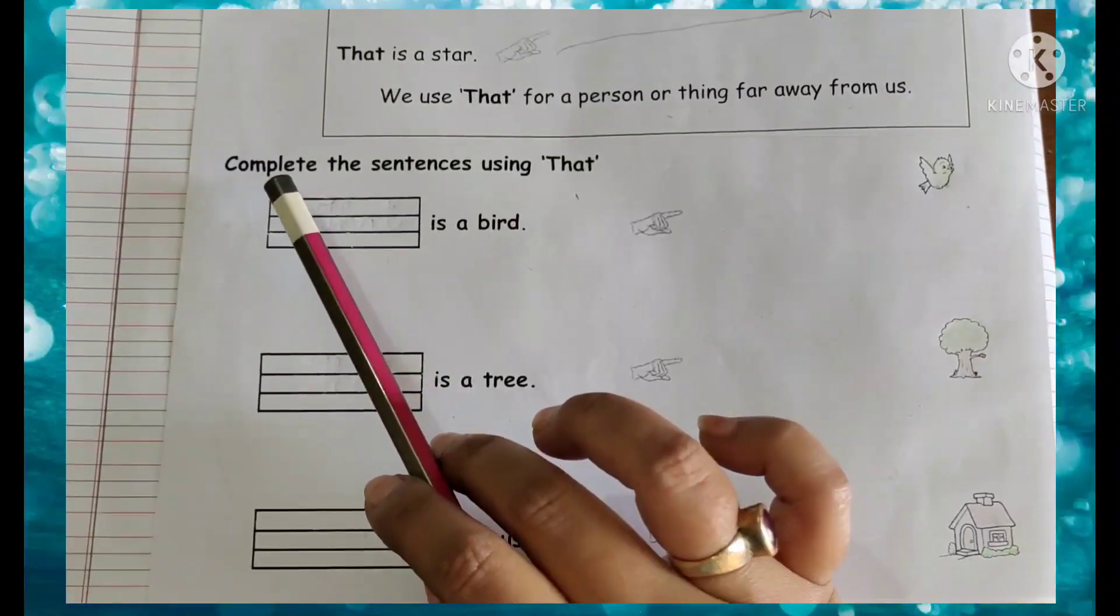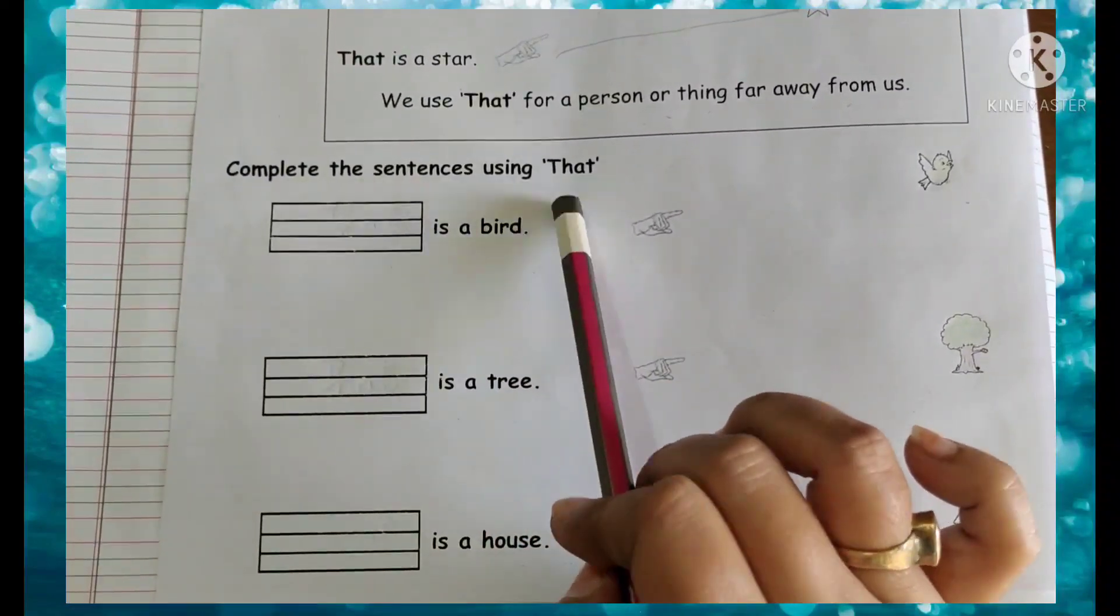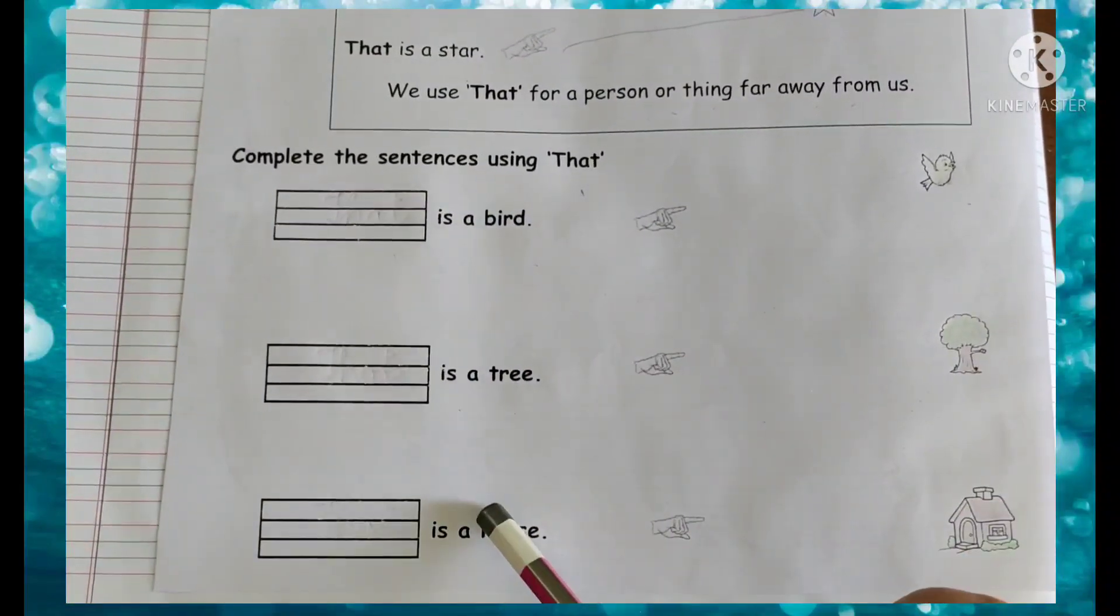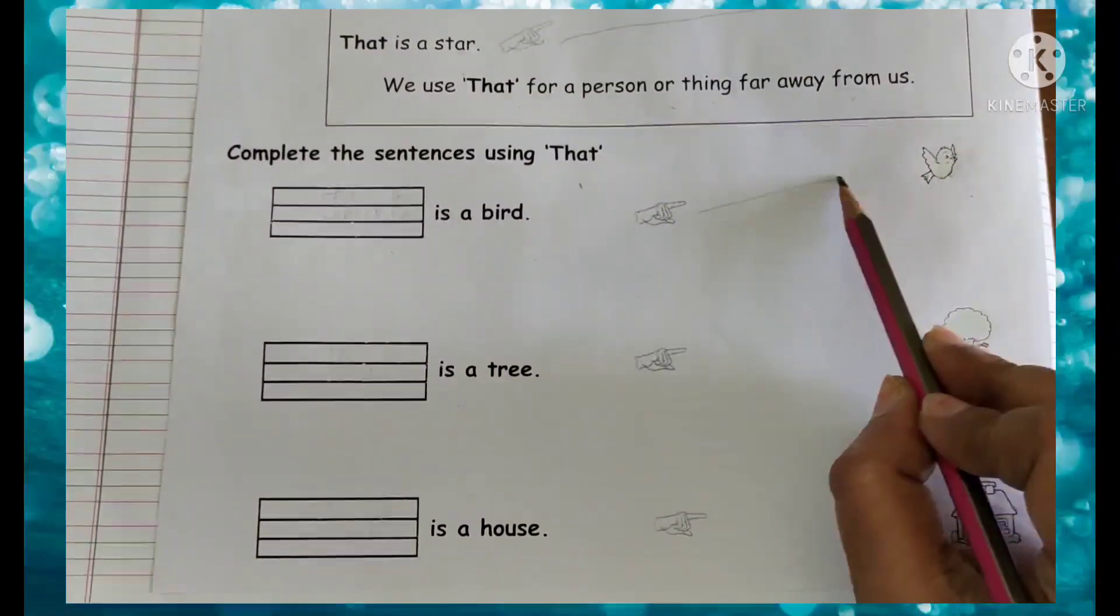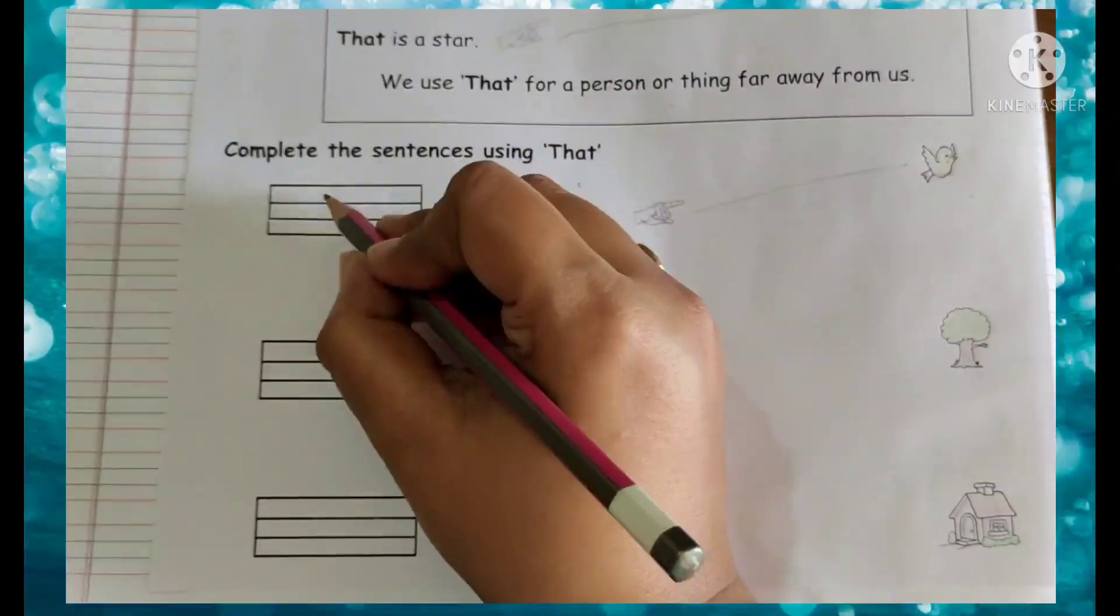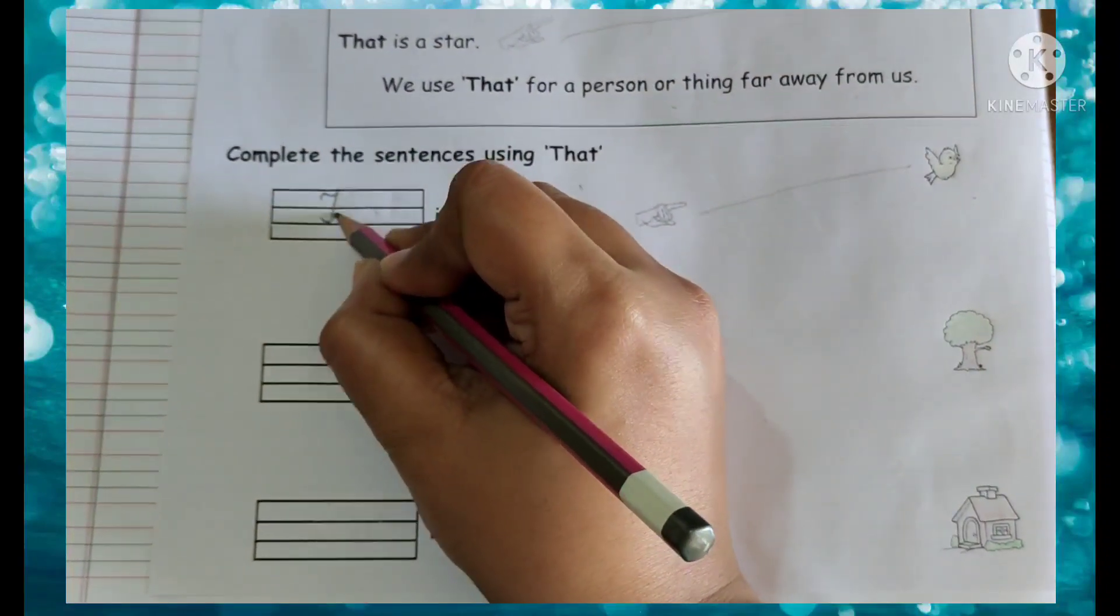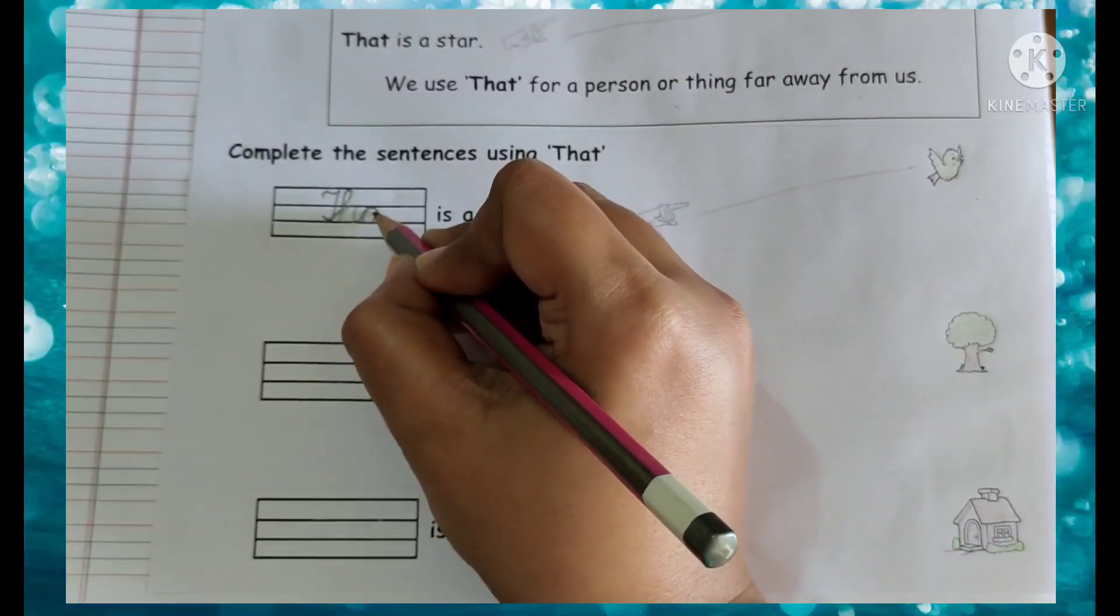Now all of you read after me. Complete the sentence using that. So we have to complete this sentence using that. That is a bird. See, the bird is so far. So what we will write here? That. T-H-A-T.